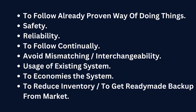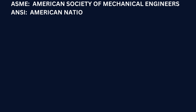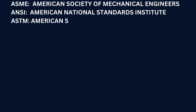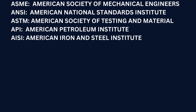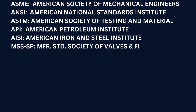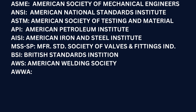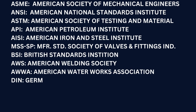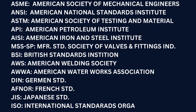Let's discuss the bodies for codes and standards: ASME — American Society of Mechanical Engineers; ANSI — American National Standards Institute; ASTM — American Society of Testing and Materials; and other standards such as American Petroleum Institute, ISA, MSS-SP, British Standards Institution, American Welding Society, German Standards, French Standards, Japanese Standards, and International Standards Organization.